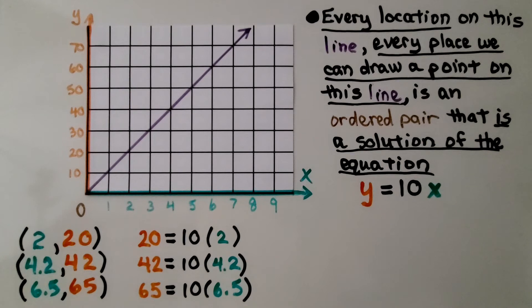Every location on this line, every place we can draw a point on this line is an ordered pair that is a solution of the equation y is equal to 10x.